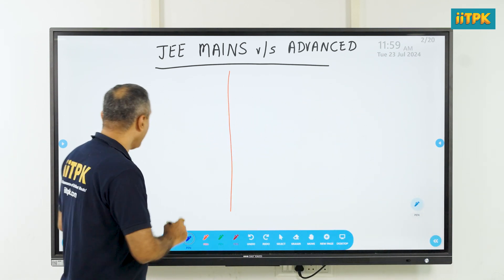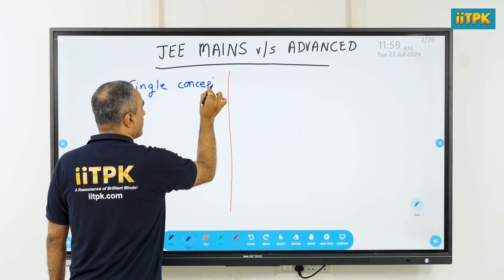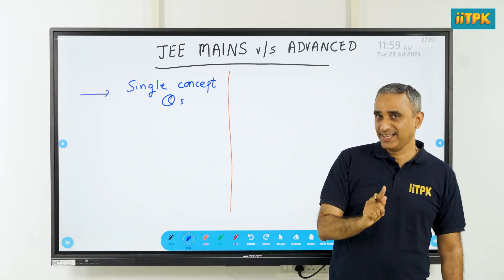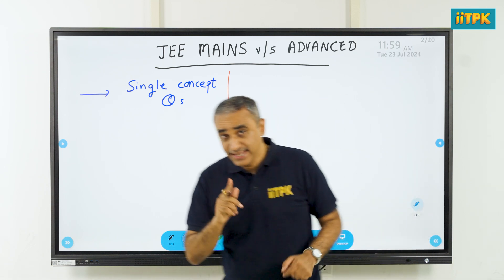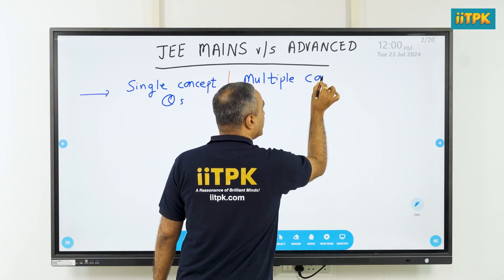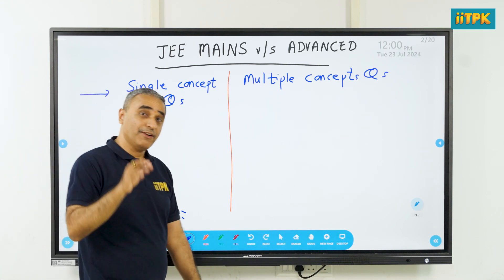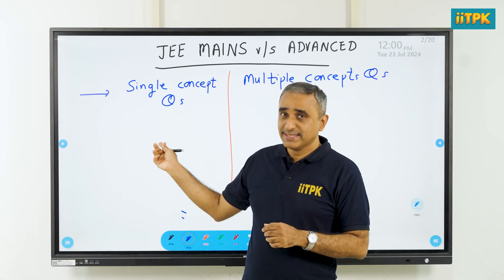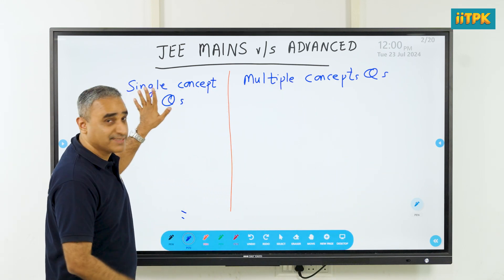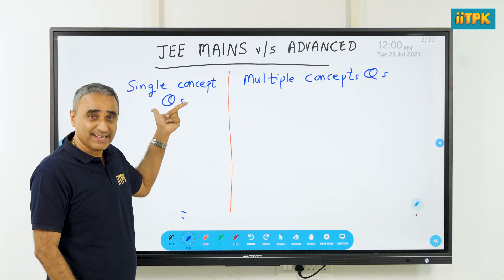In JEE Mains you will typically find single concept questions — a question requires clarity on one particular concept in the syllabus or in a particular topic or chapter. Whereas in JEE Advanced, questions generally are multiple concept based — two or three concepts are needed to solve a particular question. This is one of the fundamental differences between the level of questions asked. That said, in almost one-third of JEE Advanced questions you would still see single concept questions — not every question in JEE Advanced is a multiple concept question.